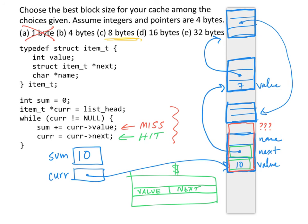So the answer to the question here is C, eight bytes, because eight bytes minimizes the number of misses we have without bringing in a whole bunch of extra data that wouldn't give us any benefit.